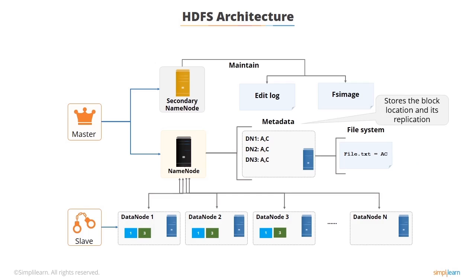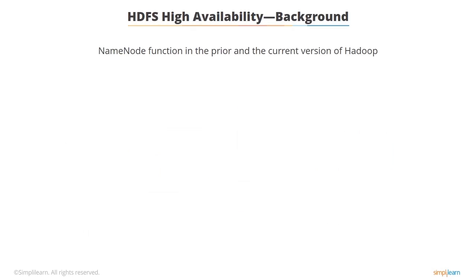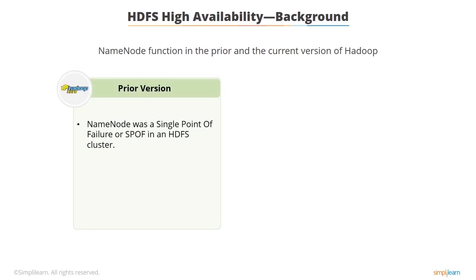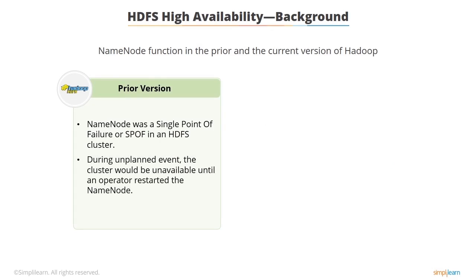There is a secondary name node which performs tasks for the name node and is also considered as a master node. Prior to Hadoop 2.0.0, the name node was a single point of failure, or SPOF, in an HDFS cluster. Each cluster had a single name node, and in case of an unplanned event such as a system failure, the cluster would be unavailable until an operator restarted the name node.